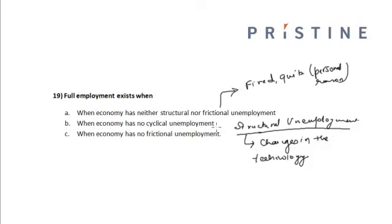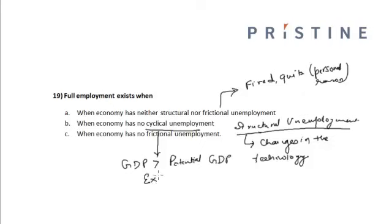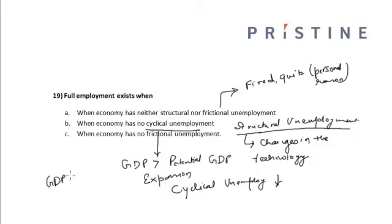Cyclical unemployment is associated with the business cycle. If the economy is under expansion — when GDP is greater than potential GDP — then cyclical unemployment will go down. However, when GDP is less than potential GDP, that state is characterized as economic contraction.